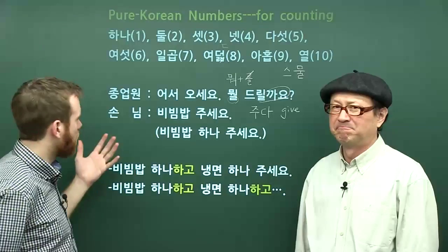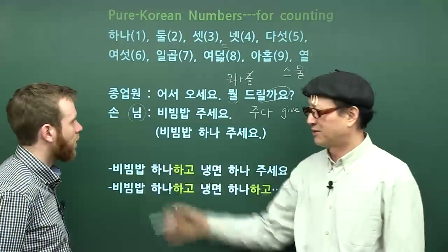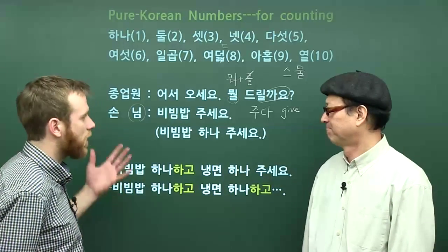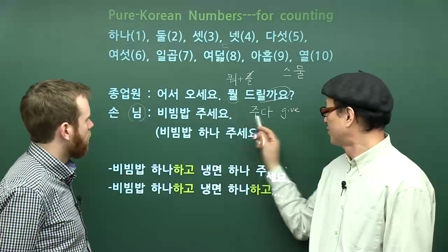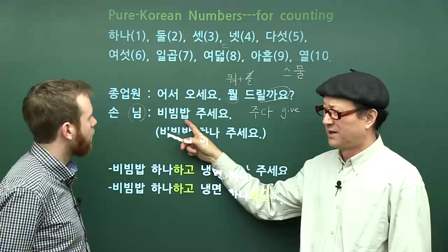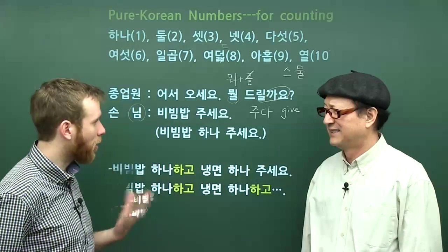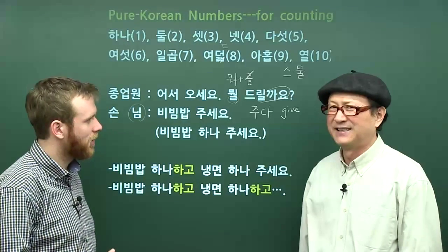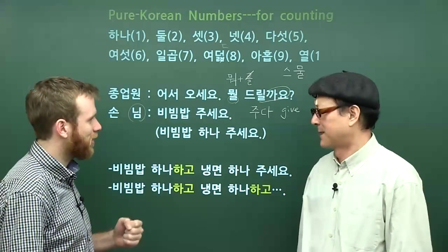손님 would be the guest or customer in a restaurant. 님 is a title — like 선생님. The customer says: 비빔밥 주세요. 비빔밥 is a very common, popular Korean food. It's a mixture of rice and vegetables — it can have different ingredients. 비빔밥 basically just means mixed rice with all sorts of things. 밥 means cooked rice. Raw or uncooked rice is 쌀.